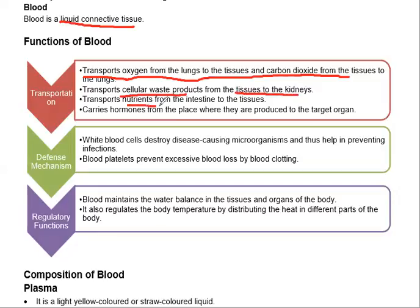Blood carries nutrients from the intestines. Nutrients are in the intestines. So oxygen and carbon dioxide transport, waste products transport, nutrients transport. The next main function is the hormone — blood is able to transport hormones.